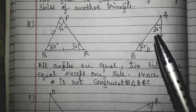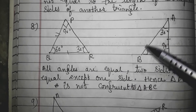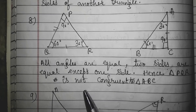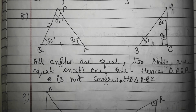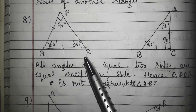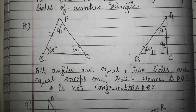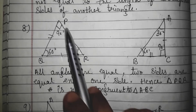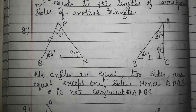Three angles and two sides of one triangle equal the three angles and two sides of the other — five congruent parts are equal. But these triangles are not congruent, because the third side PR may not be equal to the third side of the other triangle. If I try to use SSS congruency, two sides are equal but the third side is not. So I cannot apply SSS. Even with five equal parts — three angles and two sides — these two triangles are not congruent to each other.